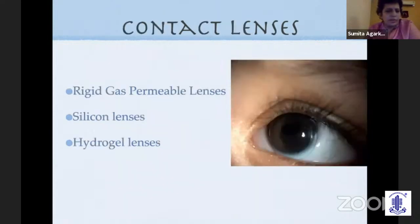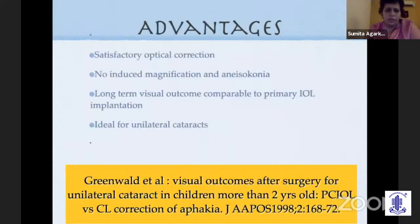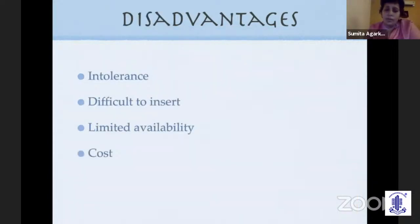Contact lenses in unilateral cases are our only option. Rigid gas permeable lenses are better; silicone lenses are expensive. Advantages include no induced magnification and comparable long-term visual outcomes. Difficulties with contact lenses include intolerance, availability, cost, and parents sometimes finding it very difficult to manage them.